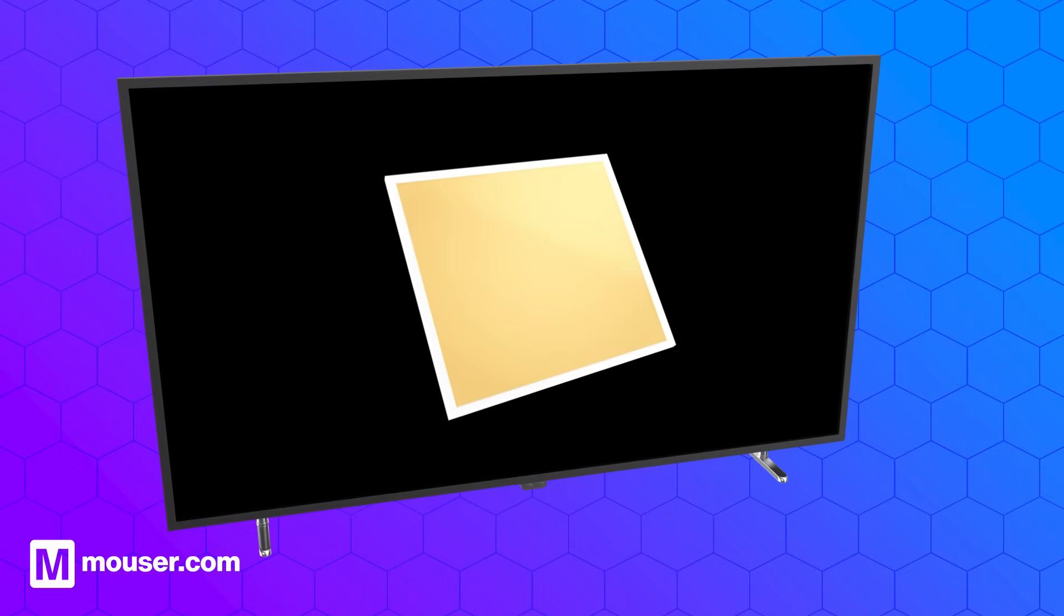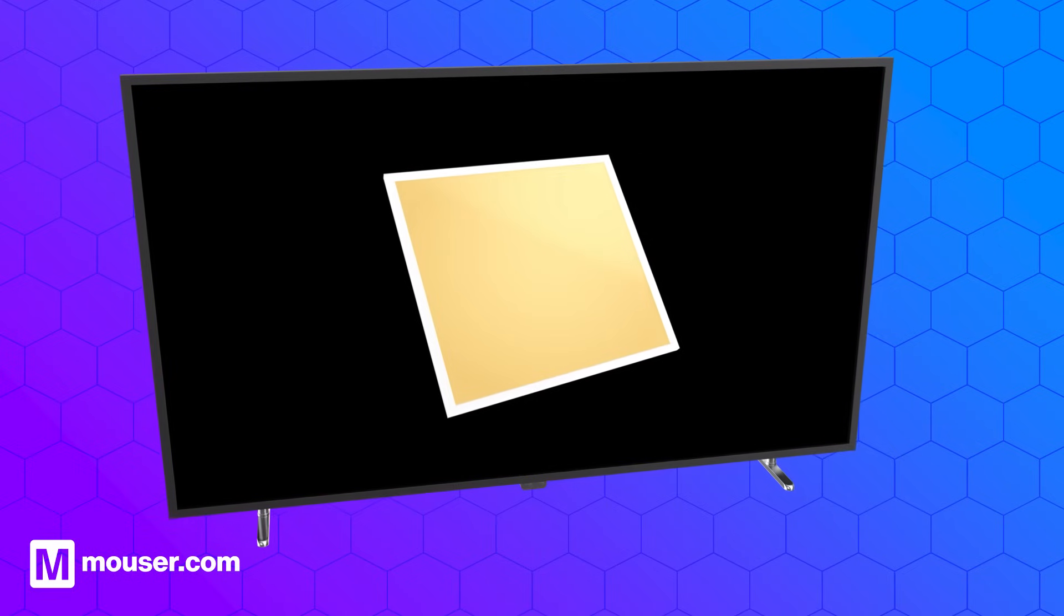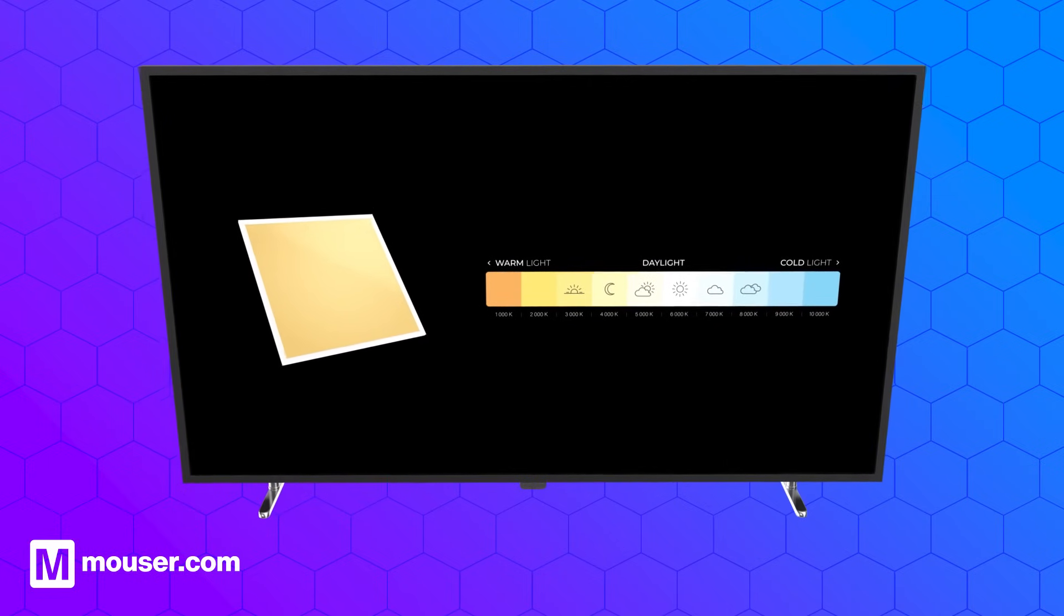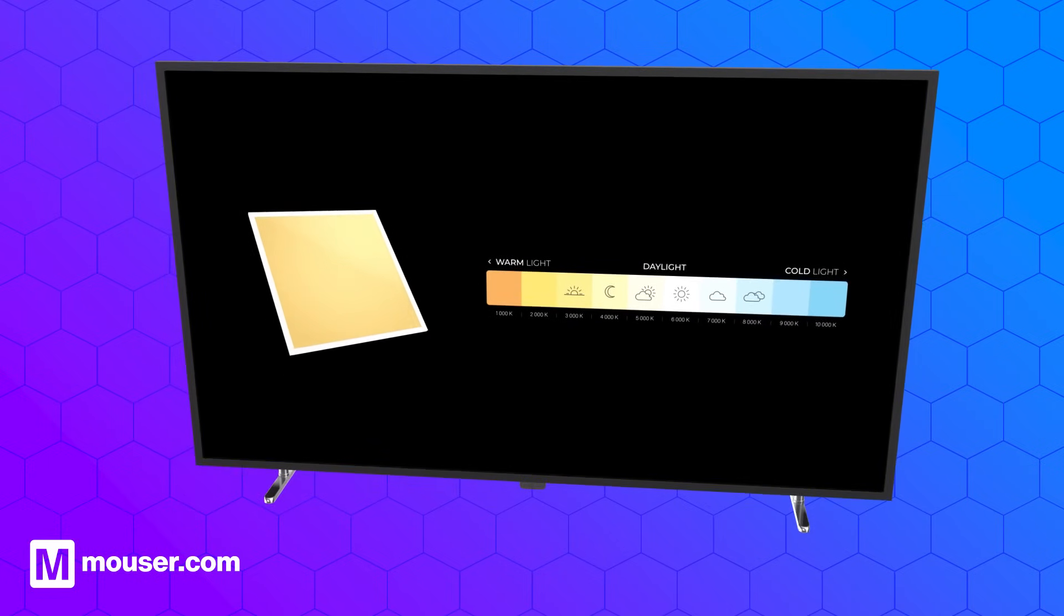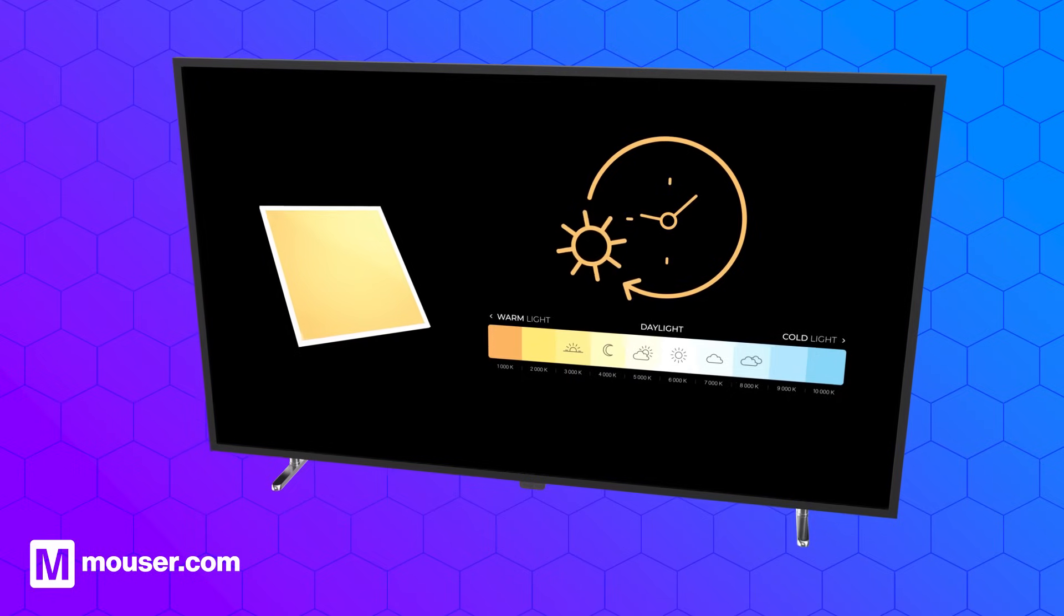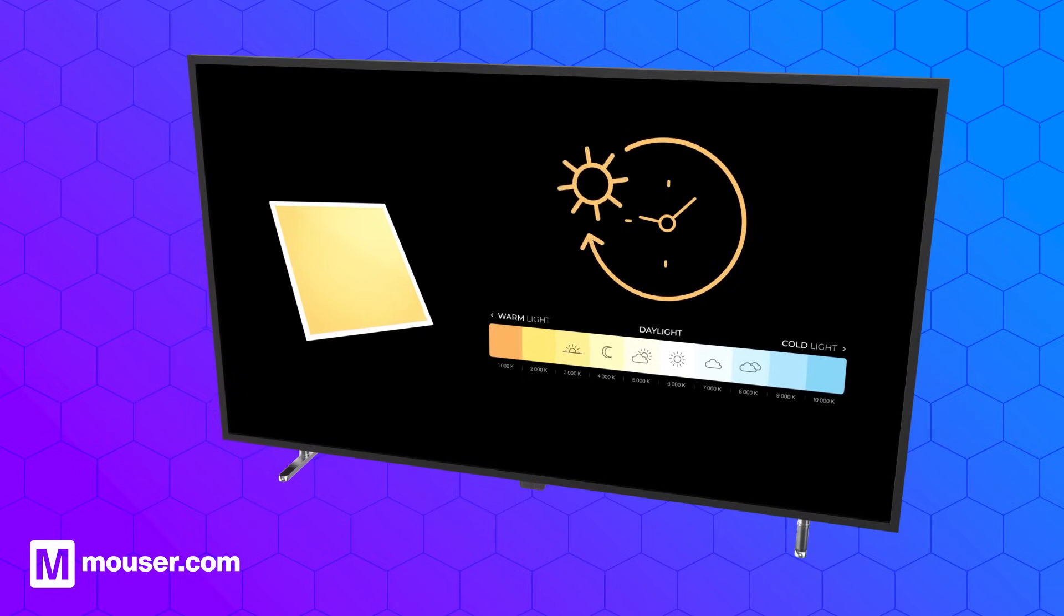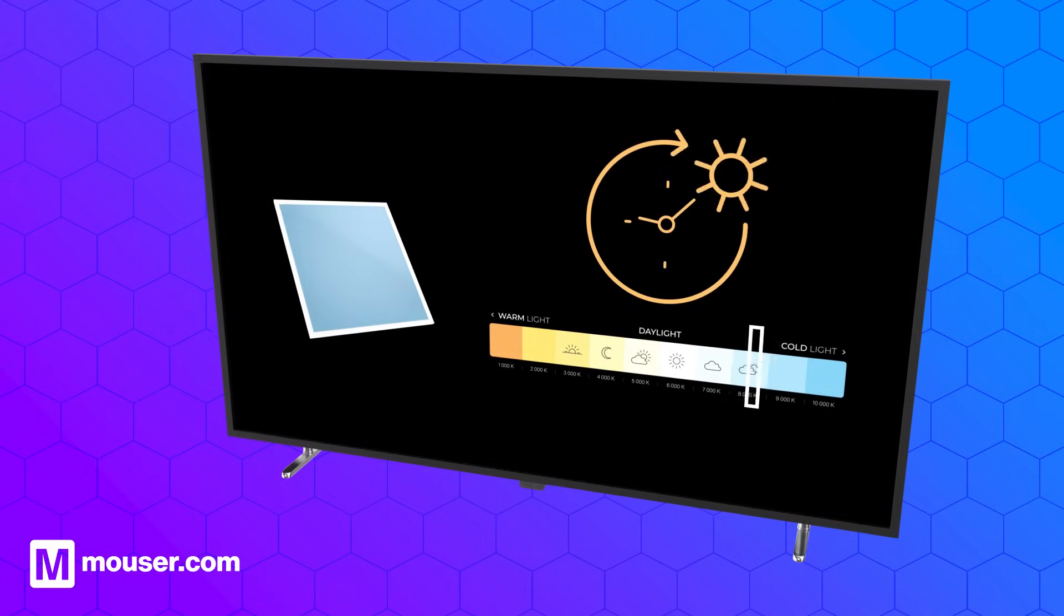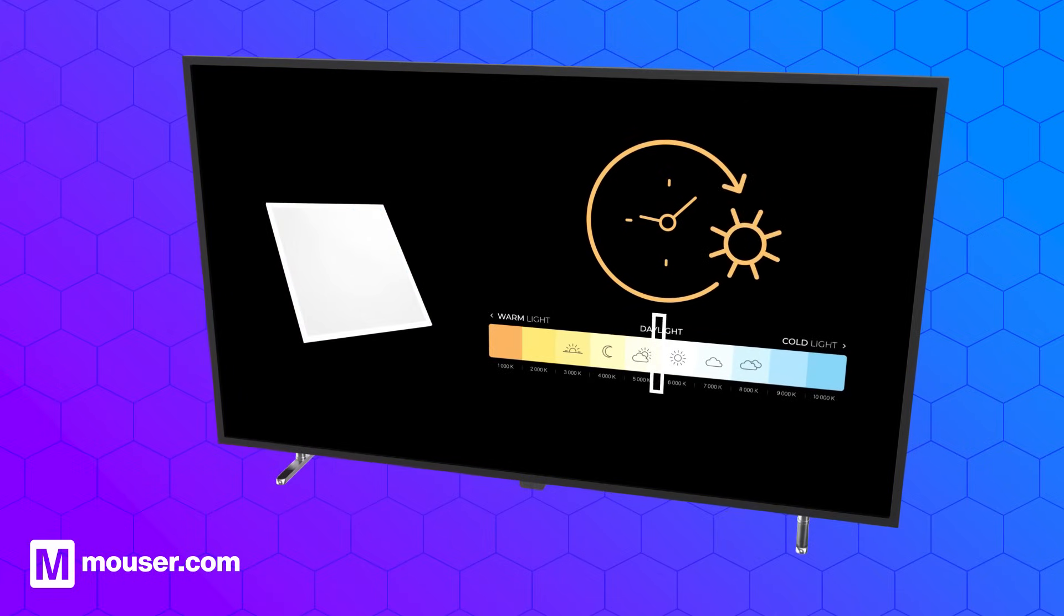Human-centric lighting systems utilize advanced LED technology, capable of emitting a broad spectrum of light colors, crucial for mimicking natural daylight cycles. These LEDs are controlled by sophisticated algorithms that adjust color temperature and intensity throughout the day, aligning with the human circadian rhythm.